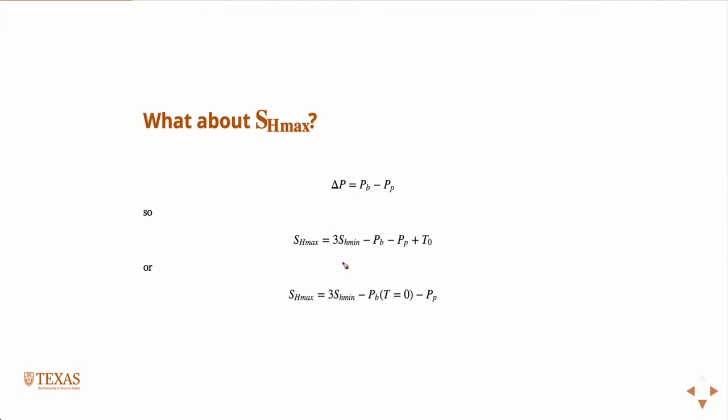And then we can measure SH min from either a step rate test or a leak off test, like we just talked about. Well, then we can use the Kerch equations at the wellbore wall, and there's no unknown, right? We assume that we can measure the tensile strength in a laboratory, or just assume it's zero. We know the pore pressure, we can determine somehow the initiation of the tensile fracture, and we know SH min from a leak off test. Then we may be able to just plug those numbers in, and we have SH max.